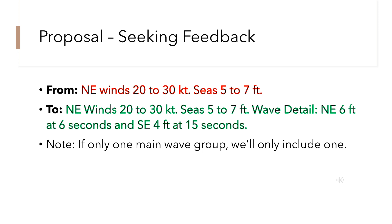If you look at the green text, which is our proposed version of our coastal waters forecast, you can see that the significant wave height — described as seas five to seven feet — is then supplemented with the wave detail that is making up that significant wave height. In this case, we have a short period northeast wave along with longer period southeast swells, which is a fairly common occurrence in the fall.